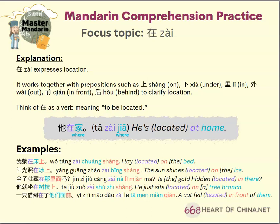Examples: 我躺在床上。 阳光照在冰上。 金子就藏在那里面吗？ 它就坐在树枝上。 一只猫倒在了它们面前。